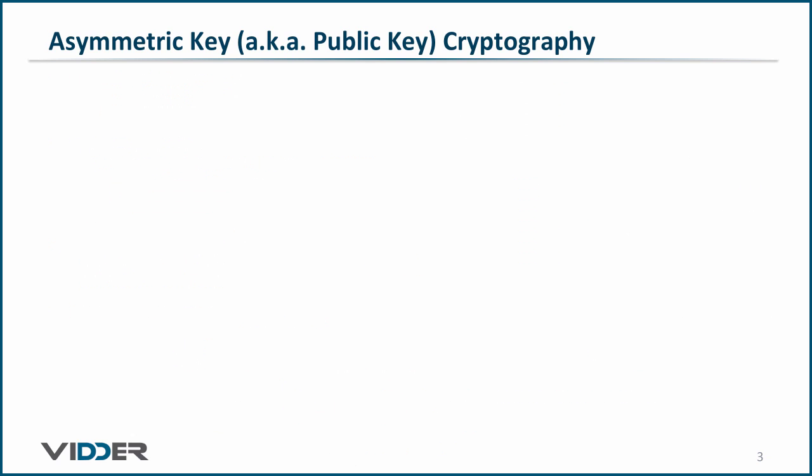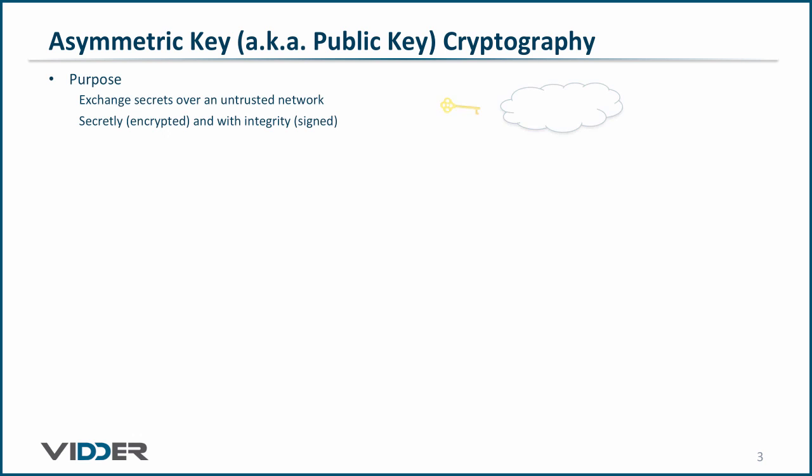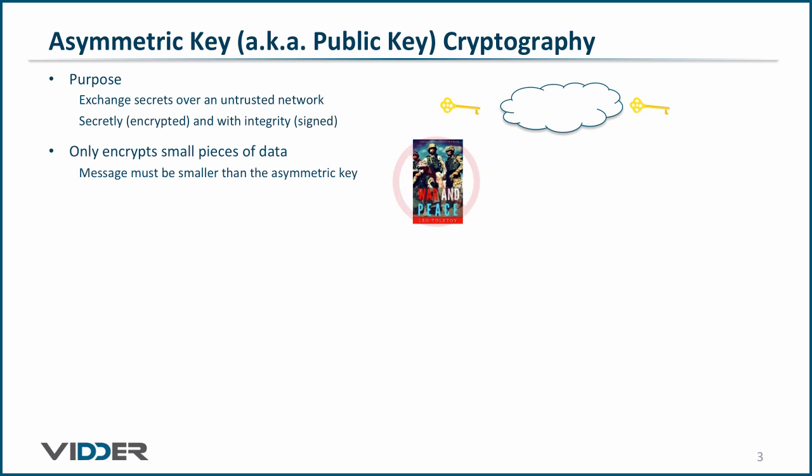And that's why we have asymmetric key encryption. Asymmetric key encryption, also known as public key cryptography, enables the exchange of secrets over an untrusted network where malicious devices and people can observe and/or modify all traffic — and it allows us to do this secretly, meaning encrypted, and with data integrity, meaning the message was signed. However, asymmetric key encryption only works on small messages, smaller than the key itself, where the keys range in size from a couple of hundreds of bits to a couple of thousands of bits.